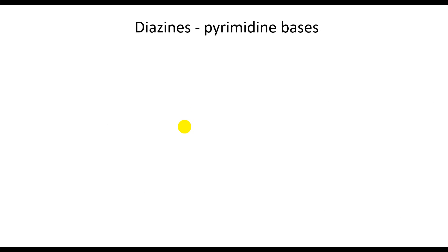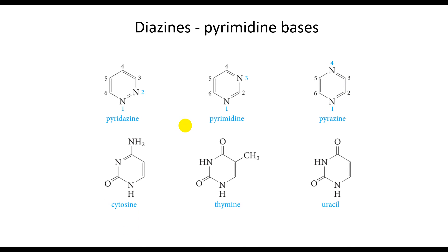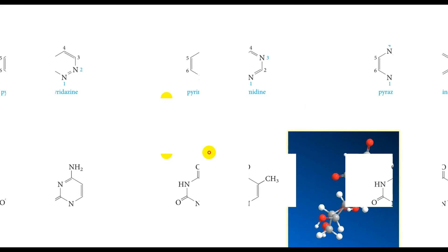If we can replace one CH with nitrogen in a benzene ring to create pyridine, we can also replace more than one CH group with nitrogen. The answer is yes. There are three diazines. The most important are the pyrimidines, derivatives of which — cytosine, thymine, and uracil — are important bases in nucleic acids DNA and RNA.